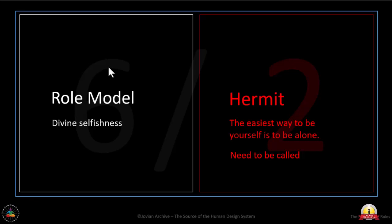Your process of authority, if you are mental-projected and 6-2 — it's only the inner process or personal process of authority as a role model hermit that someone is ever going to have the opportunity to deal with the right call and express their natural gifts in divine selfishness with awareness.